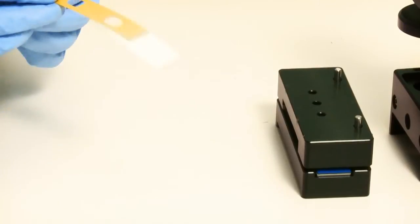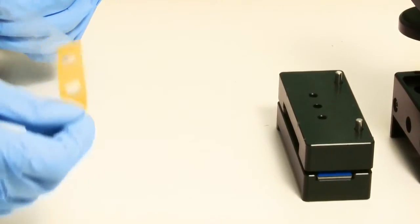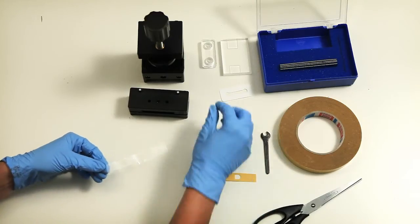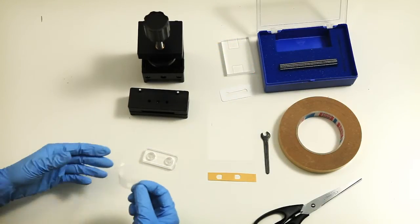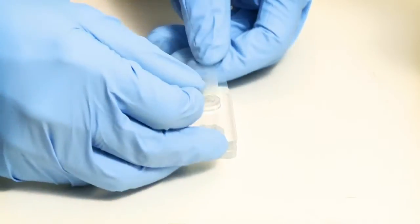Remove the protective cover of the adhesive tape and stick the sample onto the clamping cell insert. Be sure to align the holes of the sample and the insert.